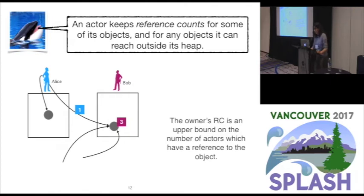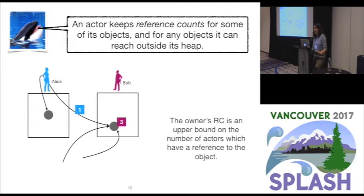What's really important to note is that this is not reference counting as in other garbage collection systems, where reference counting actually shapes the object graph — in Orca there is no problem with cycles, for example. What this reference counting means is that on the owner's side, the reference count of an object is an upper bound on the number of actors that can reach that object. Meaning that whenever this reference count reaches zero, there is no other actor in the system, other than the owner itself, that can reach those objects.